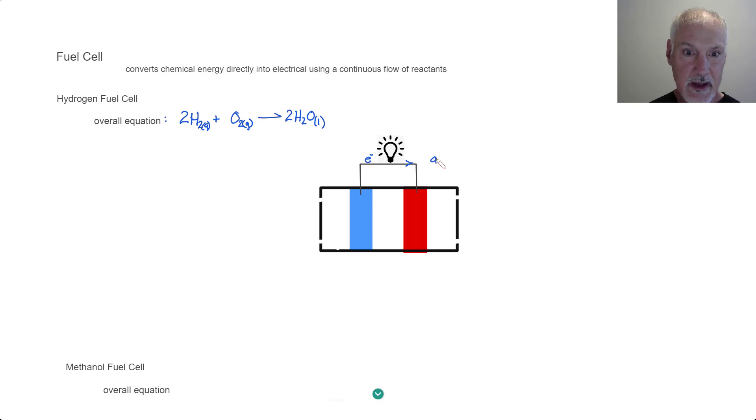So this side is gaining electrons. The gain of electrons is reduction. And reduction always occurs at the cathode. So the red electrode corresponds to my cathode. The other terminal then is losing electrons. That's oxidation. And that occurs at the anode.